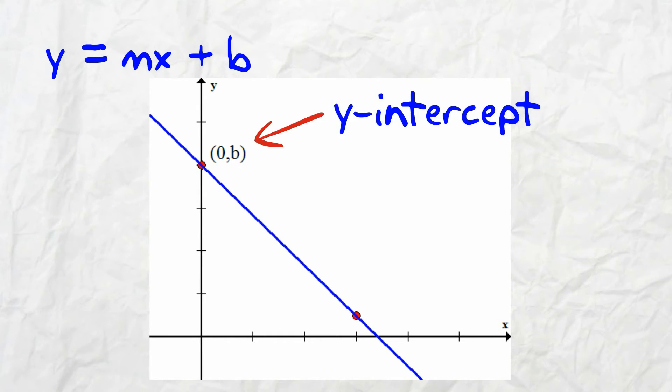Notice how the last one crosses the point 0b. We'll call that the y-intercept. The only thing left to do is to find the value of the slope, m.